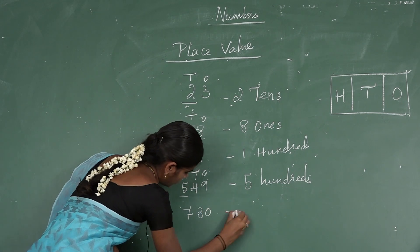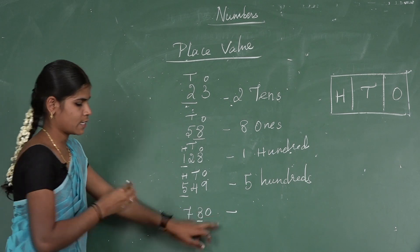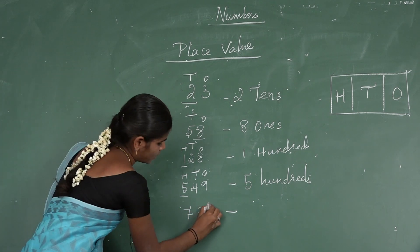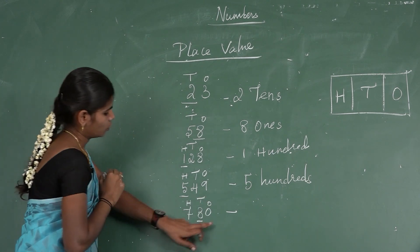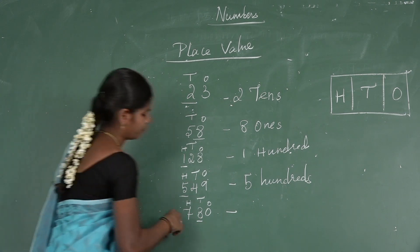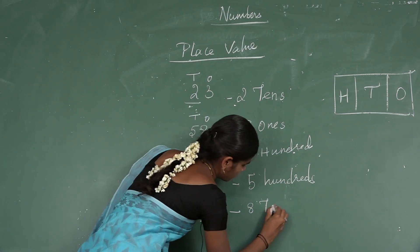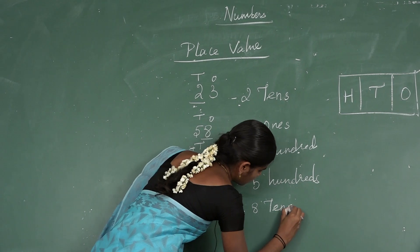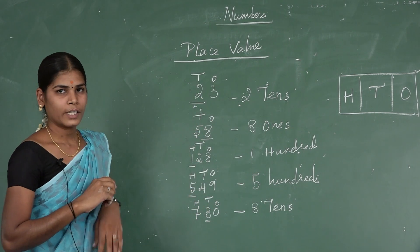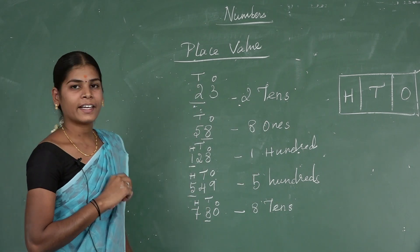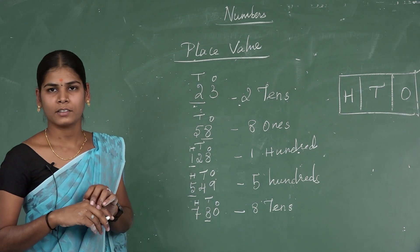Next example — 780. What is the place value of 8? Starting from 1s, 10s, 100s — the digit 8 is in the 10s position. So the place value of 8 is 8 tens, which equals 80. Okay students, in the next class we will discuss about addition and subtraction. Thank you.